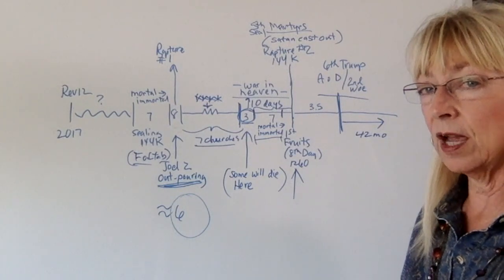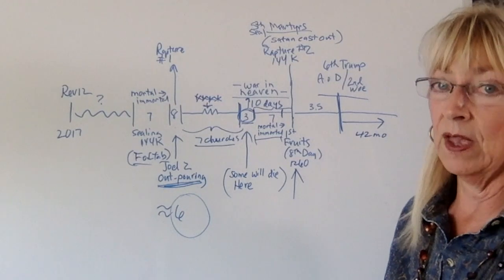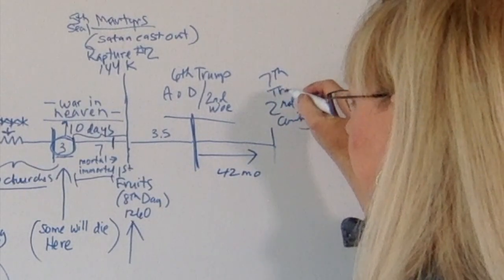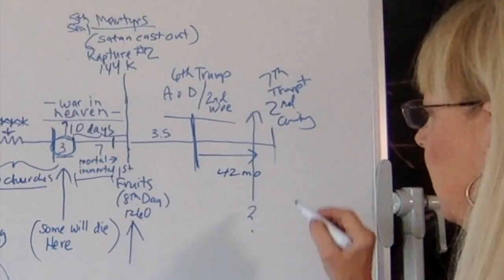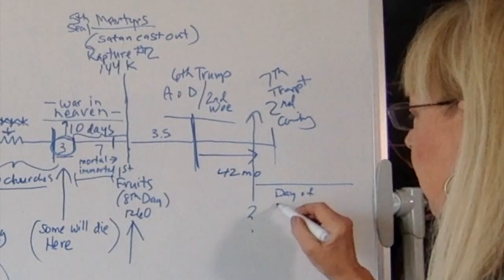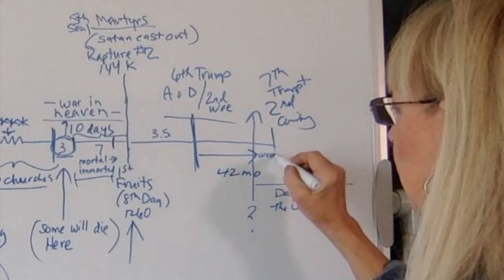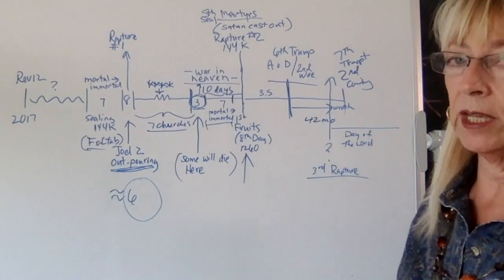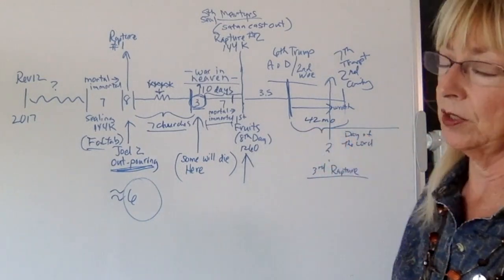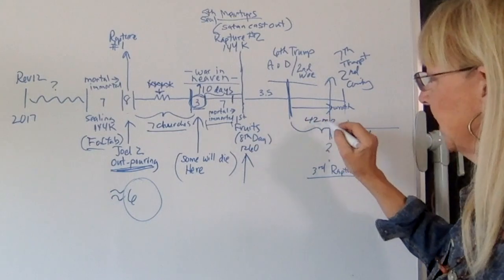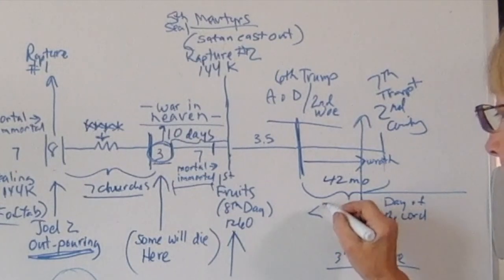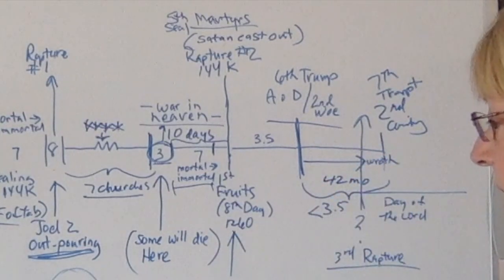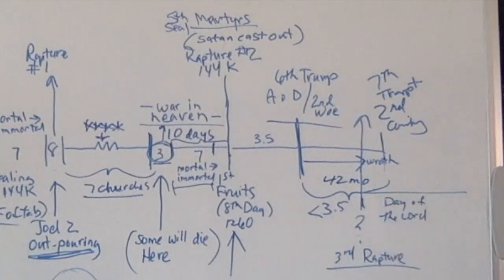There's a third rapture — the one Paul talks about: those who are alive and remain, or survive, until the coming of the Lord. The coming of the Lord is the second coming at the seventh trumpet, on a day nobody knows the day or the hour. That's when the day of the Lord starts and the wrath of God begins. The tribulation of those days during the reign of the beast is cut short — so it's less than three and a half years — and then there's the third rapture on that unknown day when the day of the Lord begins.